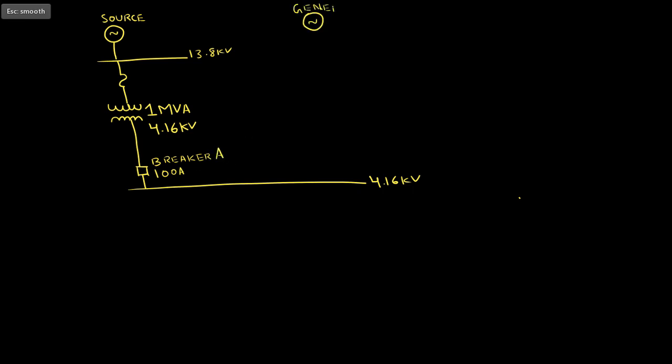In this facility, we have a utility source generating power at 13.8 kV which is feeding a 1MVA transformer. The transformer then steps the voltage down to 4.16 kV which feeds a downstream 4.16 kV bus. There is also a 100-amp breaker which we will name breaker A.